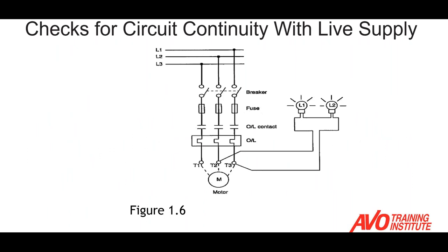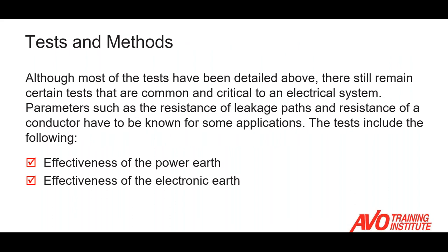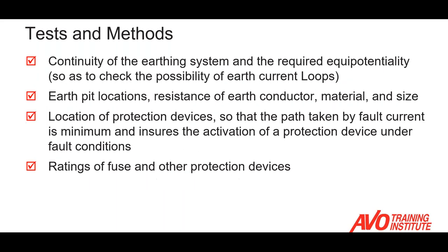We can also use two lamps with a power supply to check between phases — we should have a continuous path and get illumination on the circuit. Our probes and tools need to be insulated to minimize exposure to live conducting parts, and to minimize the inadvertent bridging of two terminals at different potentials, which can cause a short circuit and expose the technician. Most of the tests we've detailed are looking for resistance leakage path and resistance of a conductor for the known application — we're looking for a path to ground, and that's what we're trying to avoid.